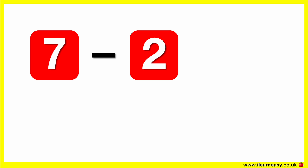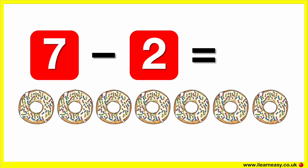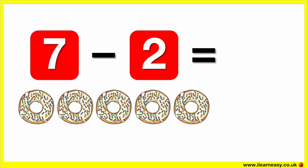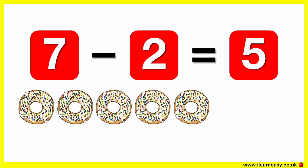Seven minus two equals. Here are seven donuts. Let's take away two. Now there are five donuts. So, seven minus two equals five.